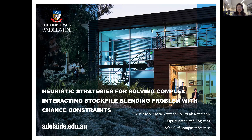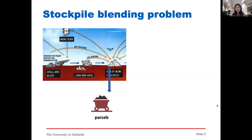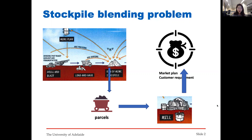First, I will introduce what the stockpile blending problems are. This picture shows the upstream of the supply chain in mining engineering. We first mine the ore material from the open pit mine or underground mine, then haul those ore from the mine to the stockpiles. These stockpiles are used to store material. The next step is to generate some parcels, and those parcels can claim material from different stockpiles. After generating those parcels, we send them to the mill, and they will undergo some mechanical or chemical processing. In the end, we can obtain our final production, which should match the market plan or the customer requirement. The strategy of generating those parcels is influenced by the mine plan, mill feed, and the market plans.